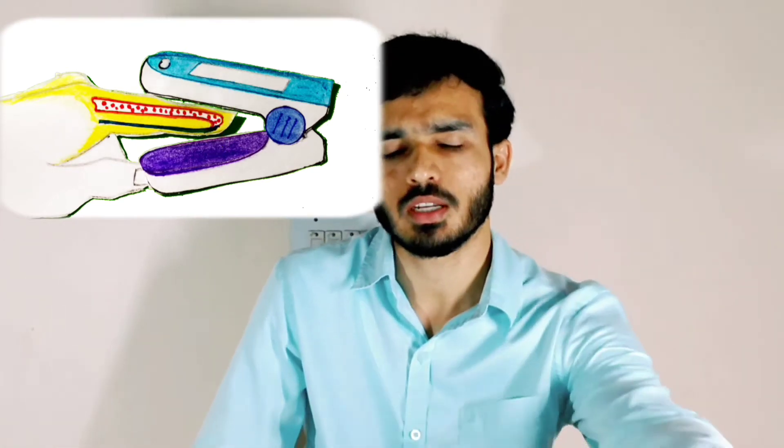Generally, what happens in our body is that when you inhale the air, the oxygen in the air enters into the lungs. In the lungs, the oxygen passively diffuses across the thin membranes within the lungs.